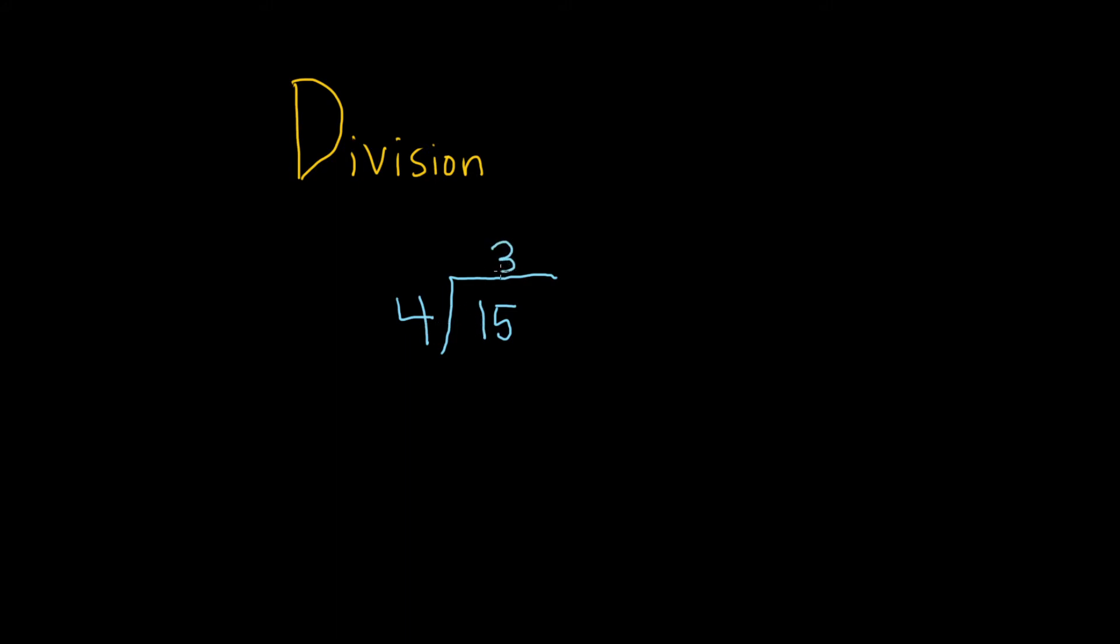And then we multiply, 3 times 4 is 12, and then we put a little line like this, we put a minus sign and we subtract. 5 minus 2 is 3, 1 minus 1 is 0, so we don't write it.